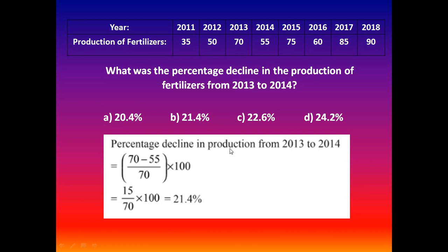Percentage decline in production from 2013 to 2014 equals (70 minus 55) divided by 70, multiplied by 100, which equals 15 divided by 70 multiplied by 100. This gives 21.4%. So option B is correct: 21.4%.